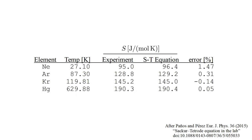The predictions of the Sackur-Tetrode equation are in excellent agreement with experiment. This gives us confidence in our theoretical development of statistical mechanics. It is also a confirmation of the fundamental principles of quantum mechanics. This is quite surprising, since our entire development was in the realm of classical mechanics. But the success of the Sackur-Tetrode equation tells us that in a very real sense, there is a smallest meaningful area of phase space, specified by Planck's constant.